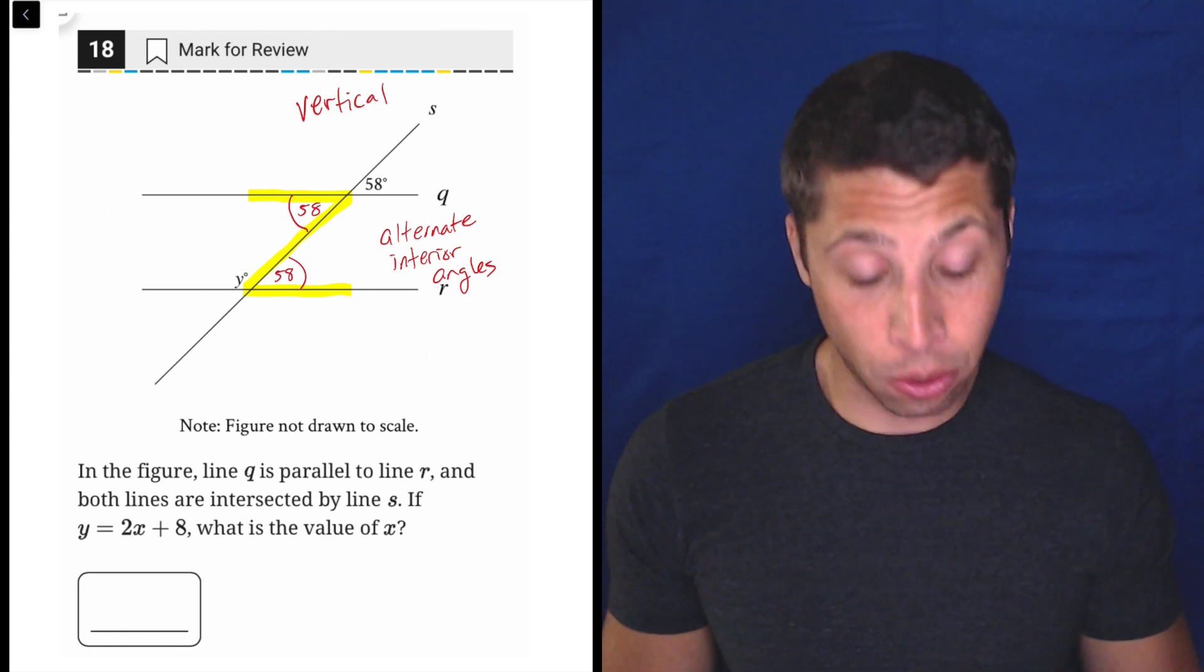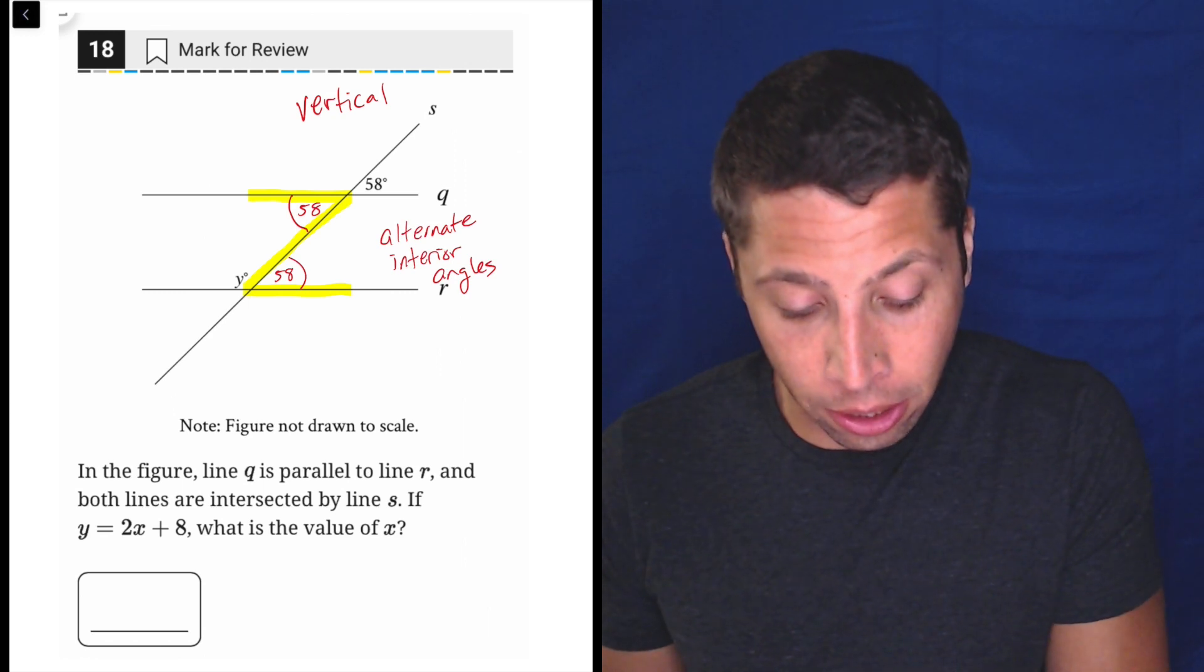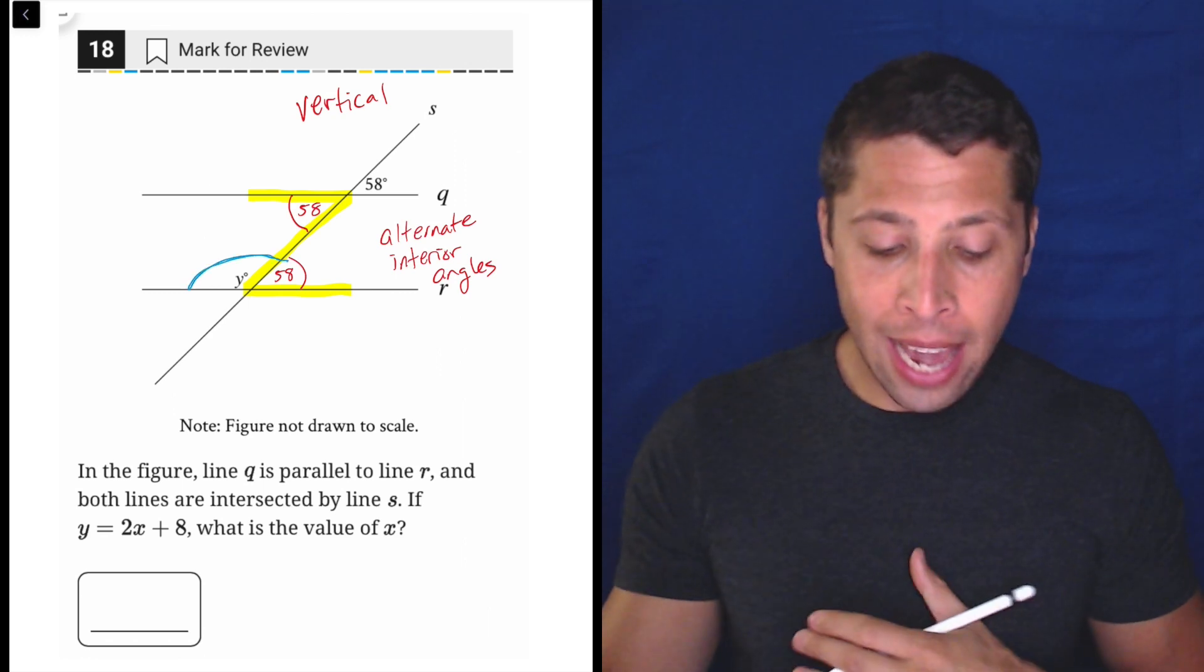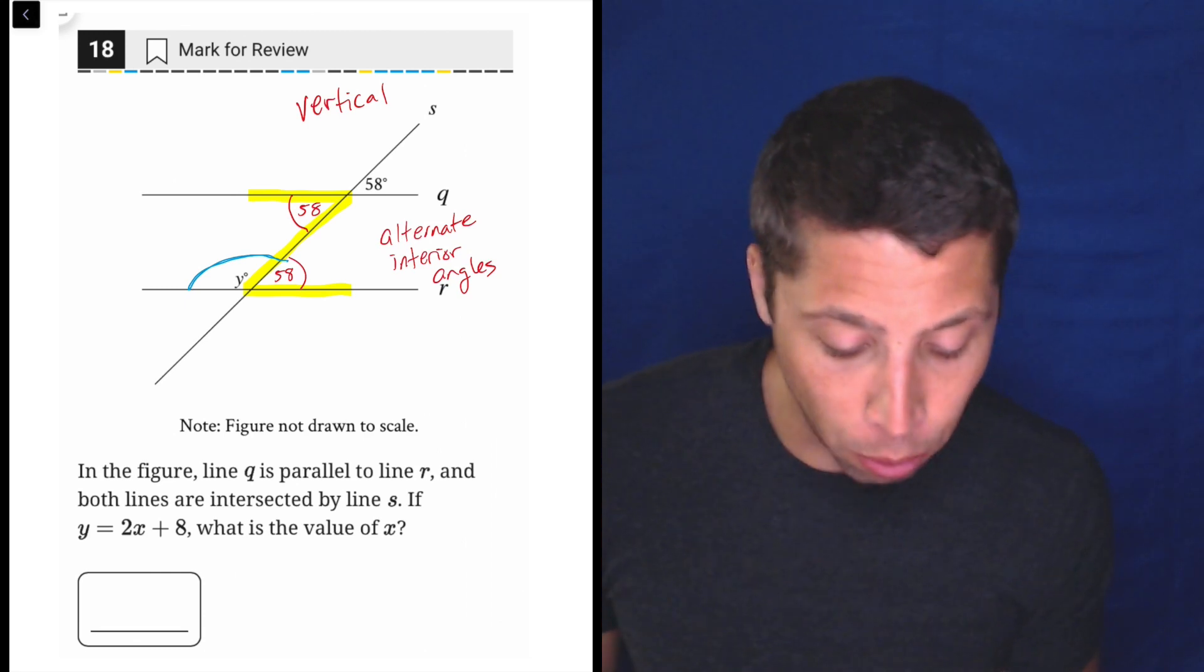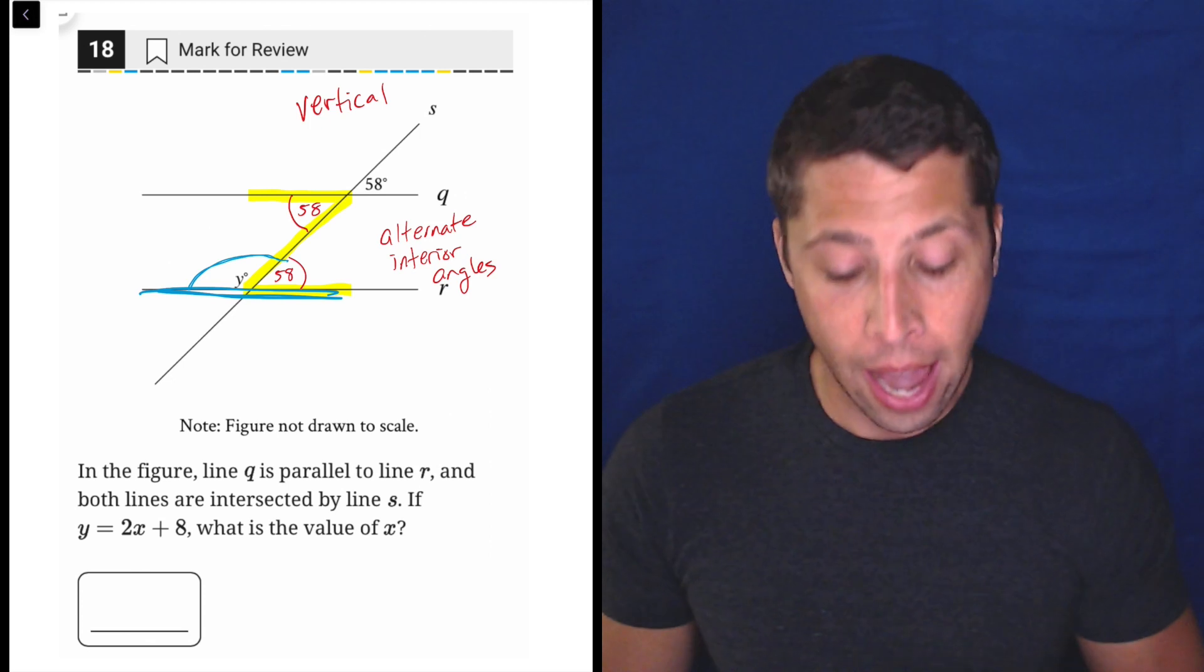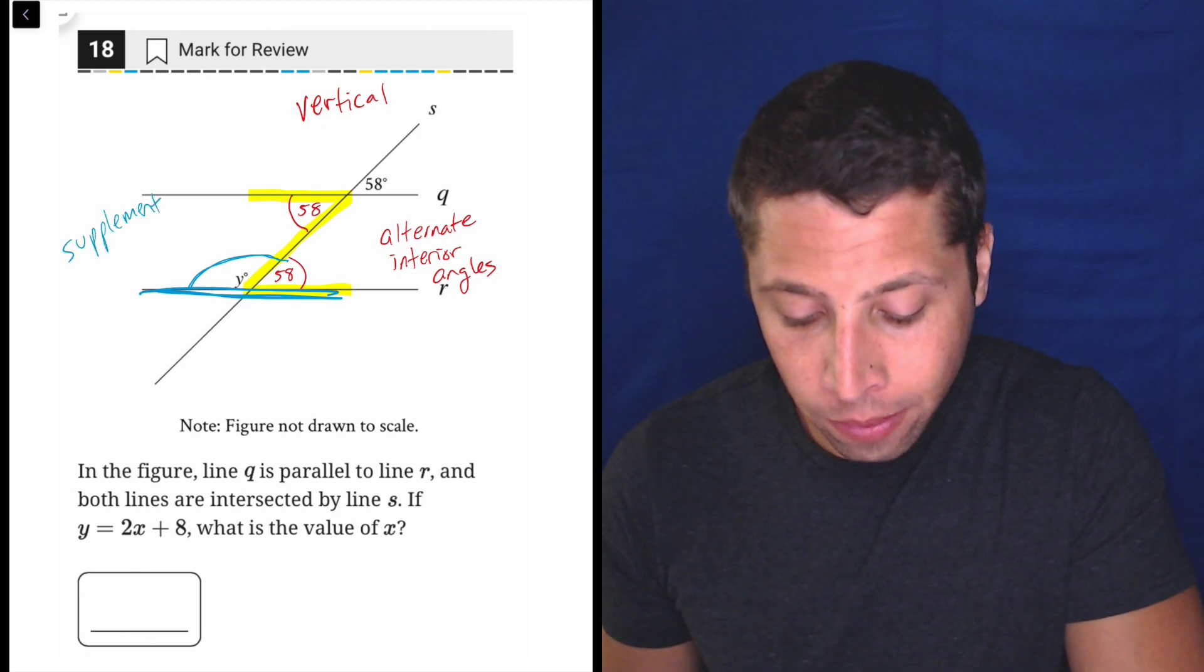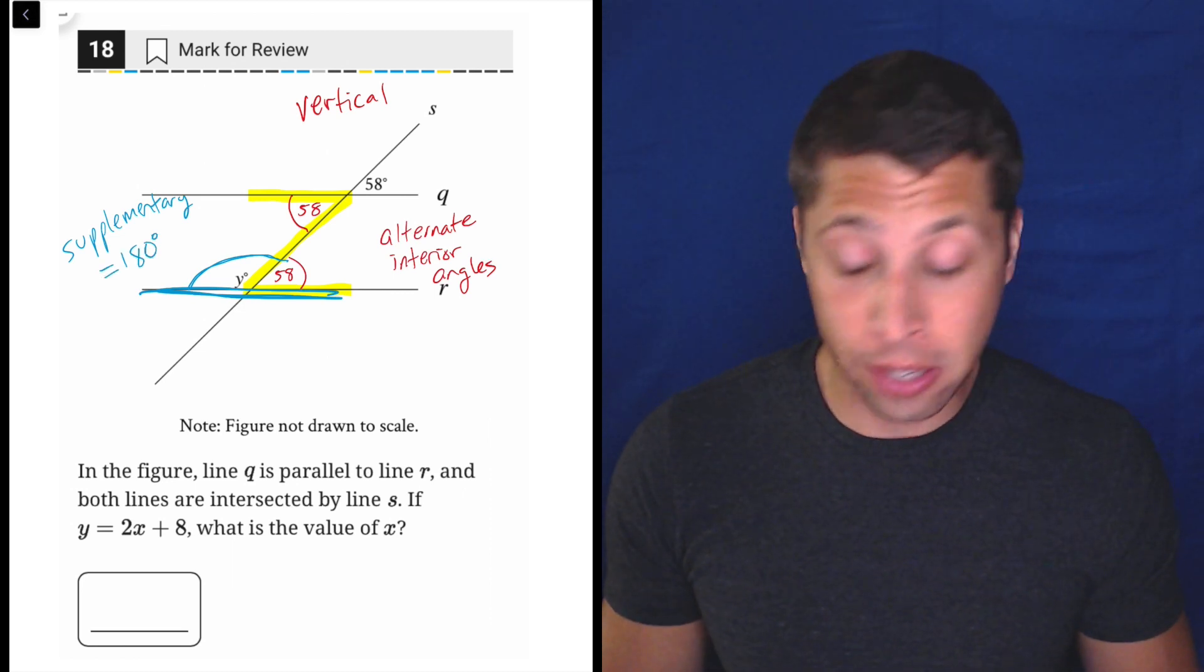Now we're getting really close to the y and now I'm going to switch colors because we're doing something else here, a different rule. The y is not 58, but together the 58 and the y are both on a single line, right? They're both on this one line and that means that they are supplementary.